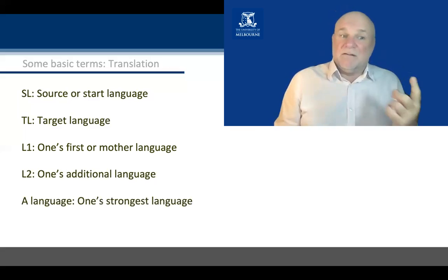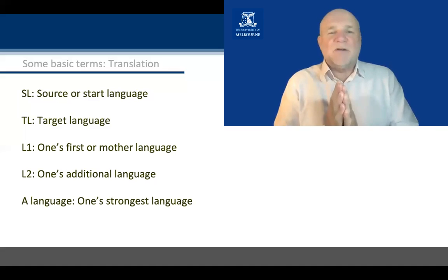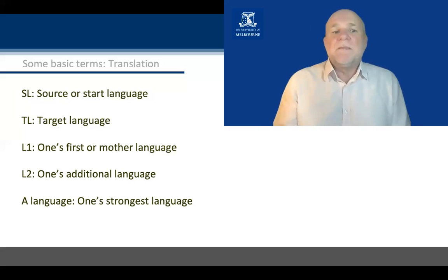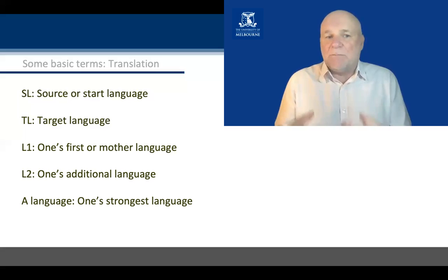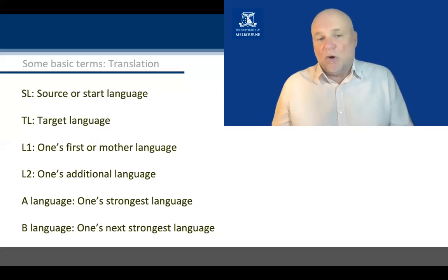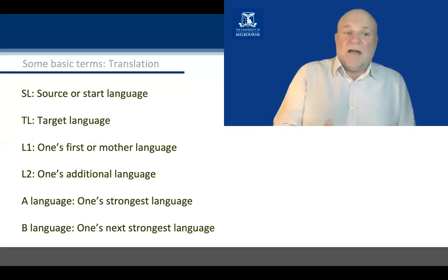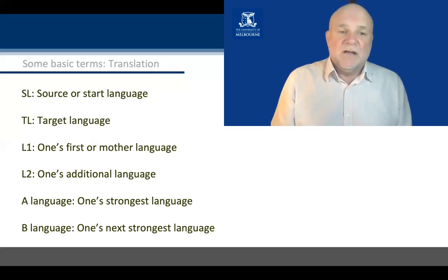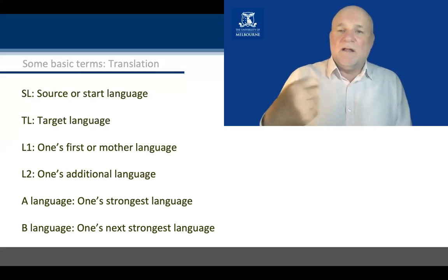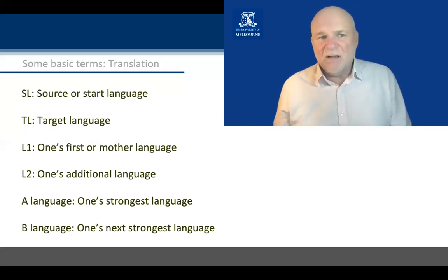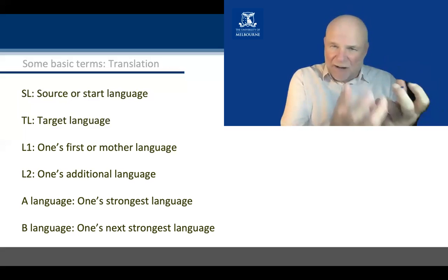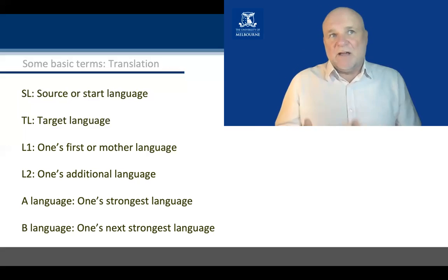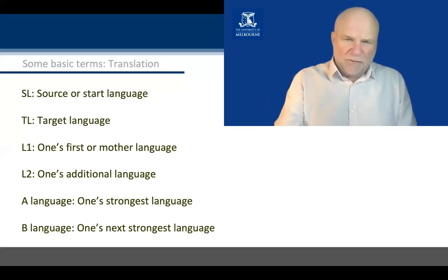Where it gets tricky and confusing is when people talk about — especially conference interpreters — working into their A language, which is their strongest language in that particular field, and their B language would be their next strongest or slightly weaker language. Interpreters can have C languages as well. We could use the same terminology referring to written translation. The important thing is that L1/L2 belongs to language acquisition, SL/TL belongs to analyzing a translation, and A/B language belongs to the translator or interpreter's performance, more particularly in the field of conference interpreting.